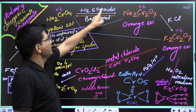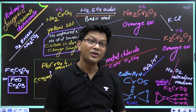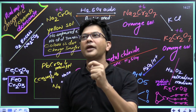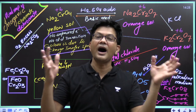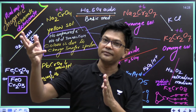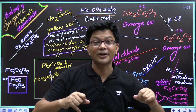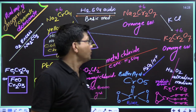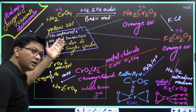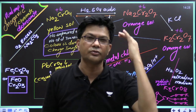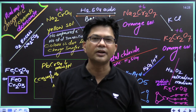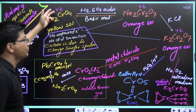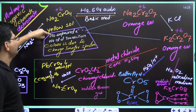Both chromate and dichromate are in the +6 oxidation state. Atomic number of chromium is 24. The electronic configuration is 4s¹ 3d⁵ — exceptional configuration for half-filled stability. So chromium has 3d⁵ and 4s¹; it loses all five electrons from 3d and one from 4s, leaving zero unpaired electrons. Yet it is still colored — even though it has no unpaired electrons, which contradicts what we usually study about d-block elements being colored due to d-d transitions.